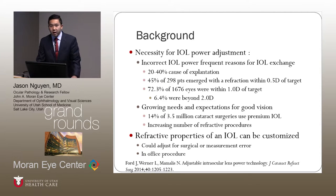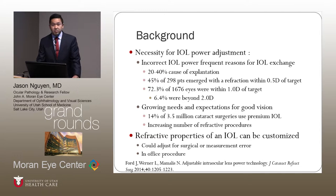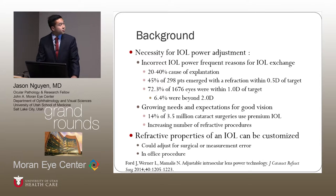So why do we need IOL power adjustment? Incorrect IOL power is one of the most frequent reasons for IOL exchange. In some years, it's up to 20% to 40% the cause of explantation. In a study of 298 patients, only 45% of patients emerged with a refraction within half a diopter of the target. In a much larger study, only 72% emerged within one diopter of the target, and 6.5% were beyond two diopters. So there's quite a broad range.